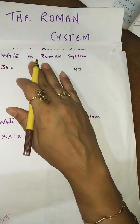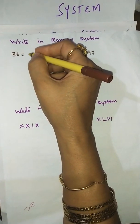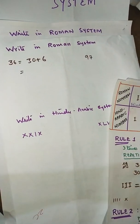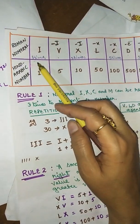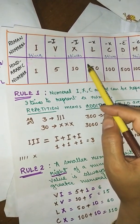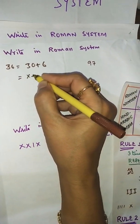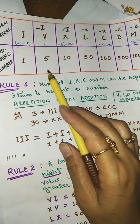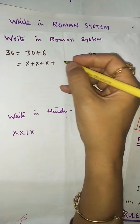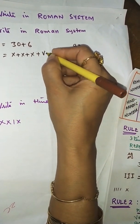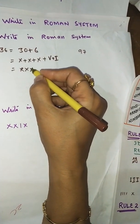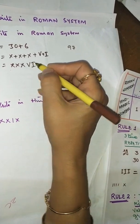Now let's look at some examples. Write 36 in the Roman system. Expand: 30 + 6. For 30, repeat X three times: X+X+X = 30. For 6, it's not in the table, but 5 is — add 1 to 5 to get 6, written as VI. So 36 in Roman numerals is XXXVI.